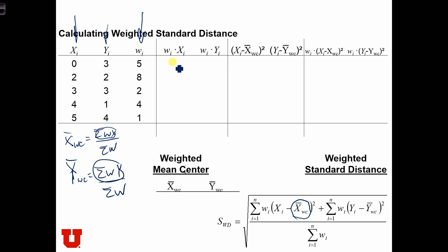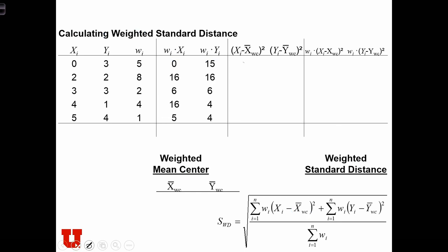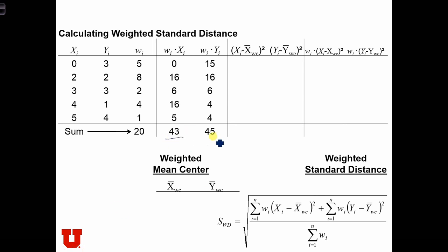The weighted x's are 0, 16, 6, 16, and 5. The weighted y's are 15, 16, 6, 4, and 4. We find the weighted mean center by dividing the sum of the weighted x's and y's by the sum of the weights. The sum of the weights is 20, the sum of the weighted x's is 43, and the sum of the weighted y's is 45. So the weighted mean center in x is 43 over 20, and in y it's 45 over 20.